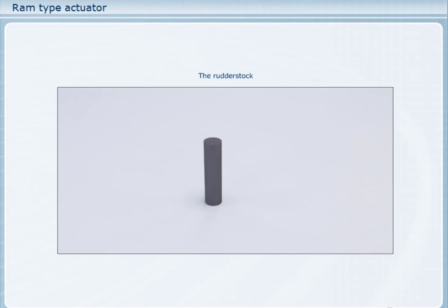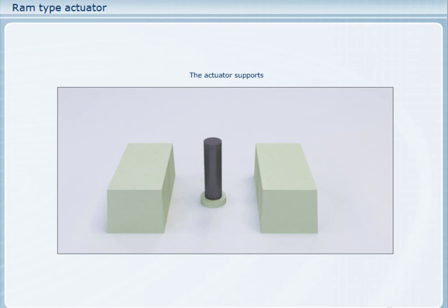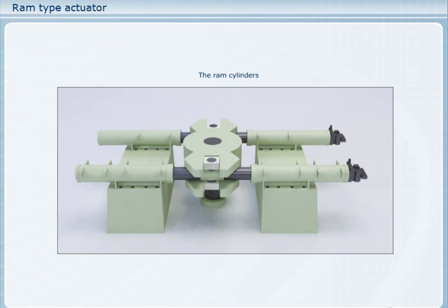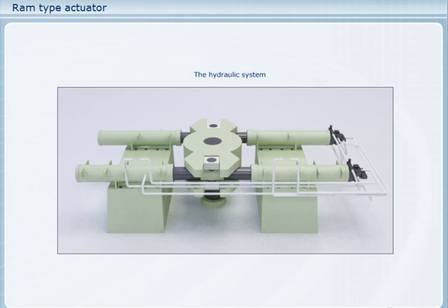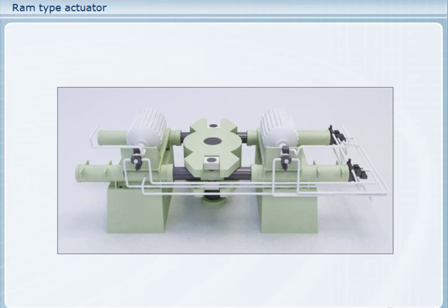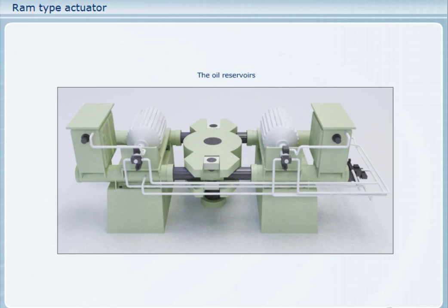This is the rudder stock. This is the watertight packing gland and rudder carrier bearing fixed to the hull structure. These are the actuator supports. Here is the tiller. The tiller can be fitted to the rudder stock in different ways, such as a tapered hydraulic fit, by key, by bolts, or a combination of these. These are the ram cylinders with pistons. Here are the high pressure hydraulic pipes, and the high pressure hydraulic pumps with their electric motors, more hydraulic pipes, and finally the oil reservoirs. The ram type steering gear system is now complete.